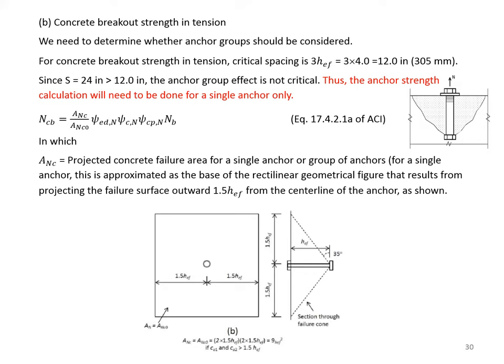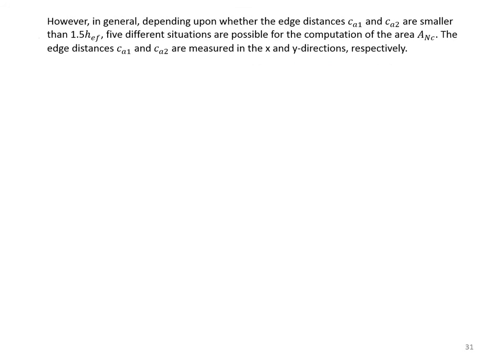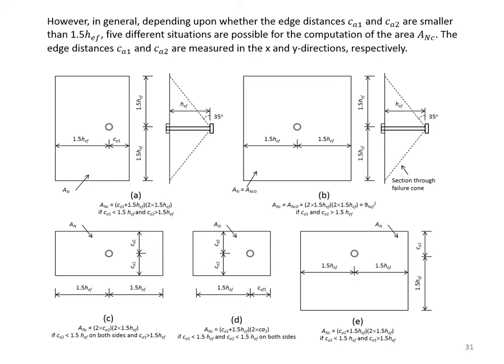Five different situations are possible for computing the area ANC depending on whether edge distances CA1 and CA2 are smaller than 1.5 HEF. In general, ANC is less than or equal to ANC0 for single anchors, and ANC is less than N times ANC0 for anchor groups where N is the number of anchors. In our example, because edge distances are larger than 1.5 times HEF, ANC equals ANC0, which is 144 square inches. The conical failure shape is projected at a 35-degree designation angle.